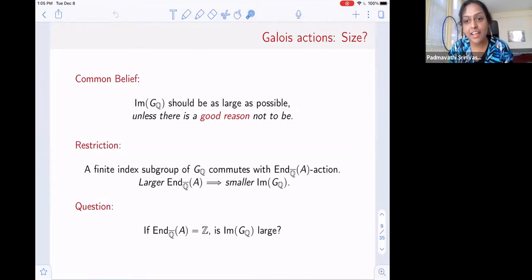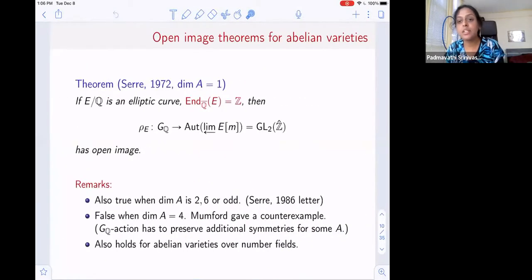If you're in the situation where the endomorphism ring is as small as possible, an abelian variety is a group, so it has all the multiplication by n maps. So Z is the smallest the geometric endomorphism ring can be. If the geometric endomorphism ring is small, does it actually mean that the image of the Galois group is large? Is it the only restriction? The first theorem that validates this principle goes back to Serre in 1972 and this is the open image theorem I alluded to earlier. He showed in 1972 that if you have an elliptic curve over the rational numbers where the geometric endomorphism ring is as small as possible as Z, then he showed that the Galois action on all the m torsion, the representation maps to GL2 Z hat, he showed that this has open image.